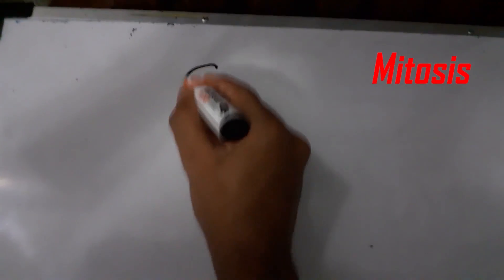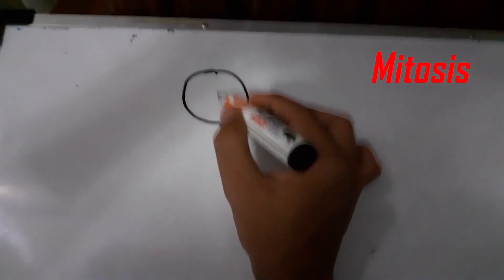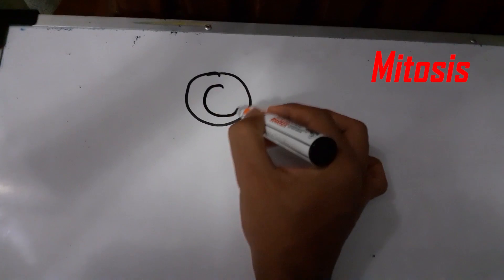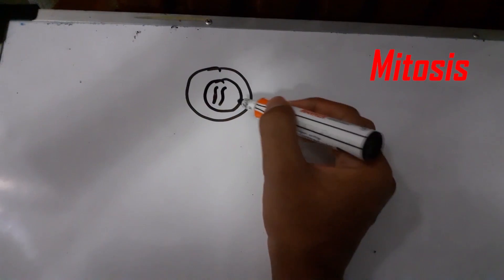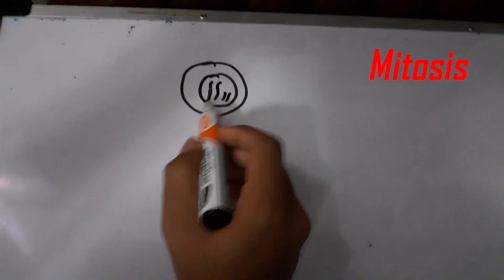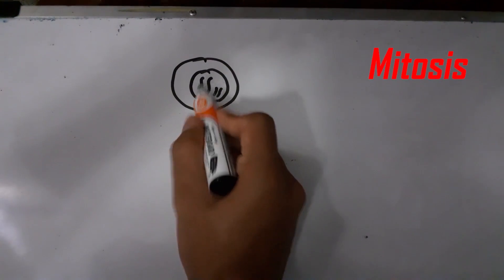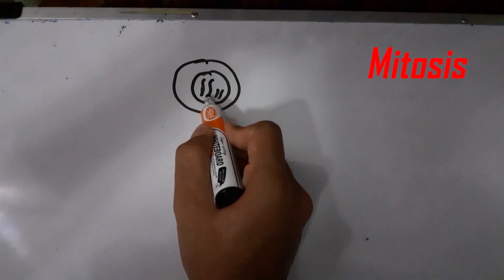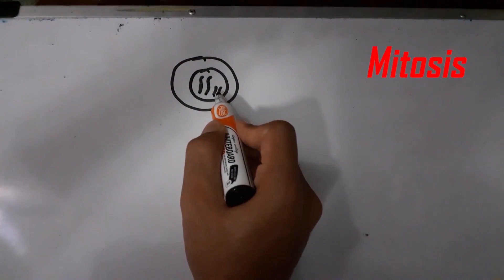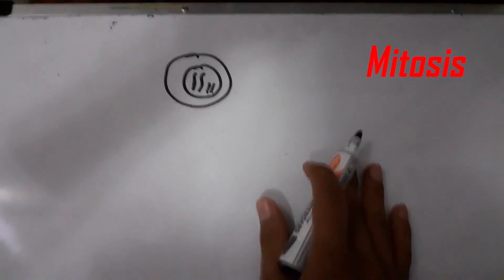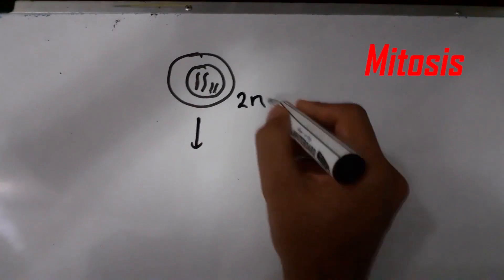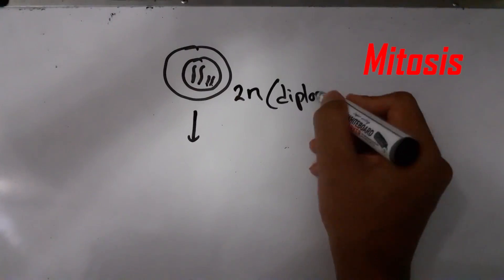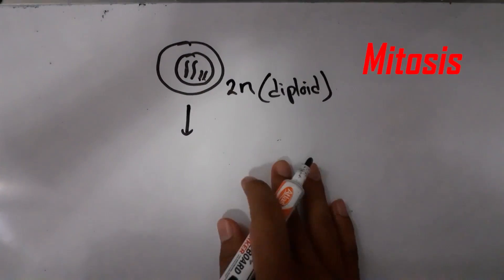In mitosis, there is a mother cell with a nucleus containing some chromosome pairs — let's say two pairs, which are two homologous chromosomes, one from mother and one from father. These are two homologous pairs of chromosomes. We call this the diploid number, meaning it has a diploid number of chromosomes. In humans, this diploid number is equal to 46.